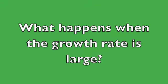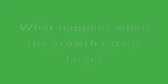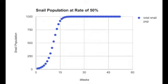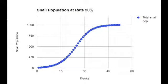How do the graphs change when the growth rate becomes larger? At a larger growth rate of 50%, the carrying capacity reaches 1,000 at almost 15 weeks, rather than the 45 weeks reached at 20%.